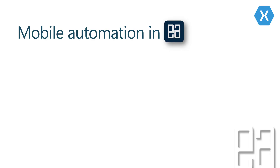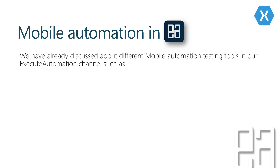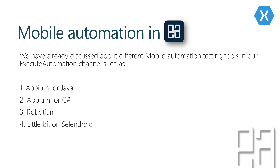Mobile automation testing in the ExitAutomations channel is already covered and we have discussed a lot of different automation testing tools, such as Appium for Java, Appium for C-sharp, Robotium, and a little bit on Cylendroid. We have already discussed some of these concepts in our ExitAutomations channel. We know that mobile automation testing can be developed in different languages, and we also saw some of the drawbacks and hiccups while working with these different tools and technologies.